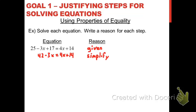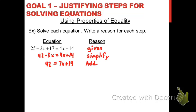Next, let's get the variables on one side of the equation. We would add 3x to both sides to cancel out the minus 3x — and it's key that we're adding to both sides. The result is 42 on the left, and 7x plus 14 on the right. Since we added the same value to each side, we use the addition property of equality. Note the abbreviation: 'Add. Prop. of =' — addition, property, of equality.